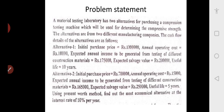The problem statement is: a material testing laboratory has two alternatives for purchasing a compression testing machine which will be used for determining the compressive strength. In our lab also we have a computerized UTM and CTM. UTM is universal testing machine and CTM is compression testing machine. The alternatives are from two different manufacturing companies and they have got two quotations. The cash flow diagram details of the alternatives are as follows.